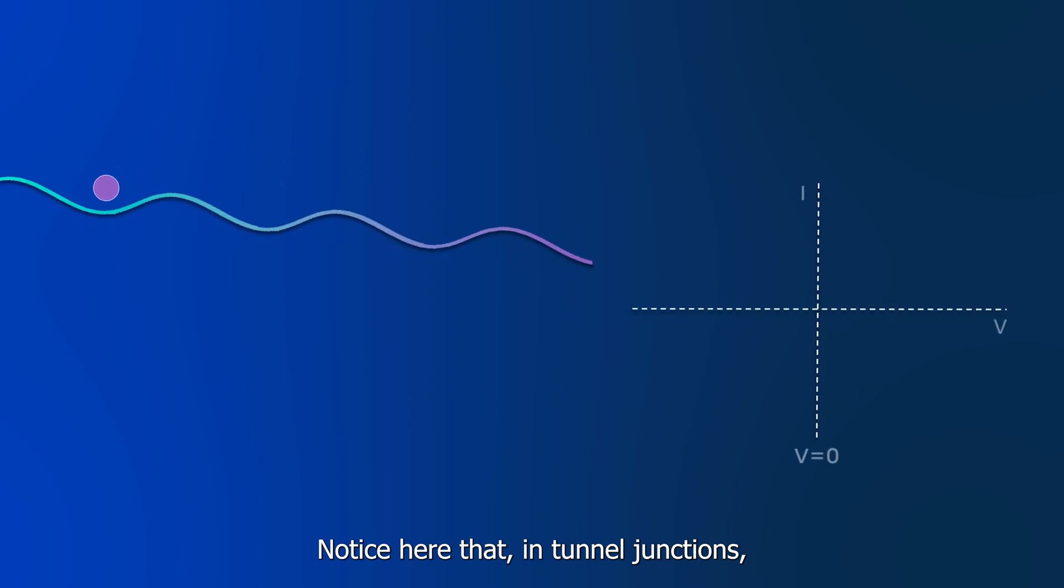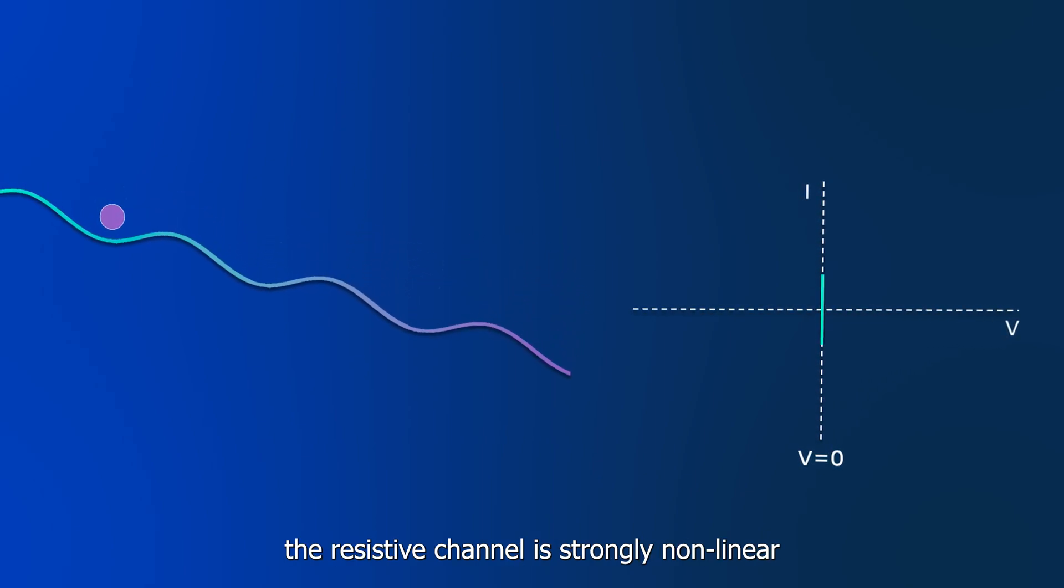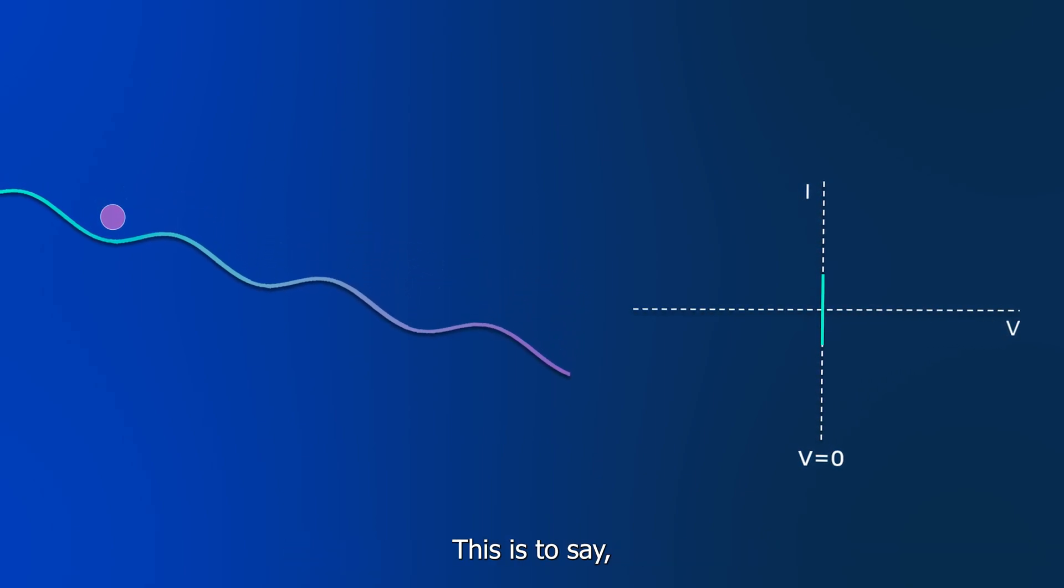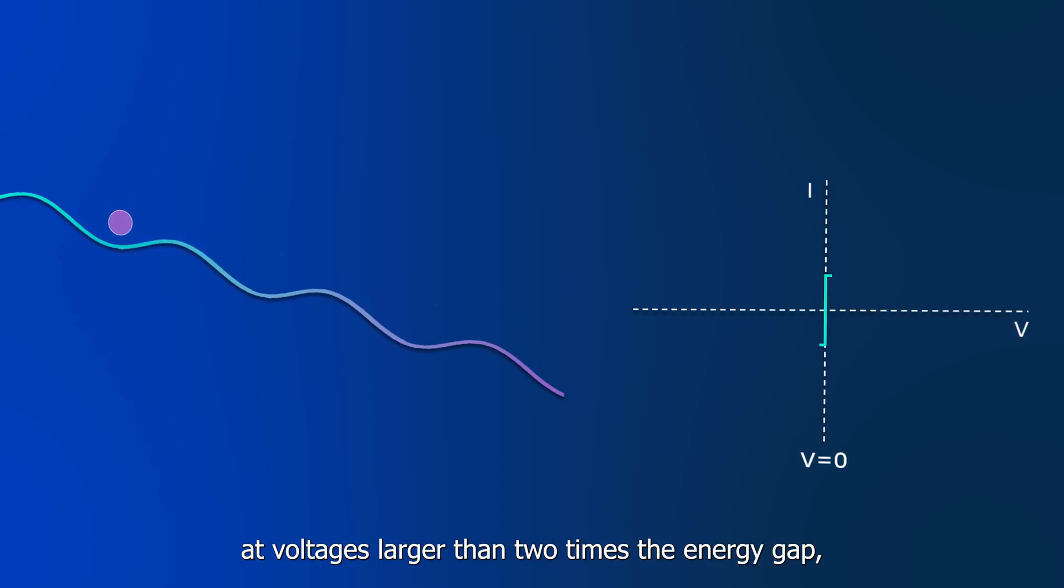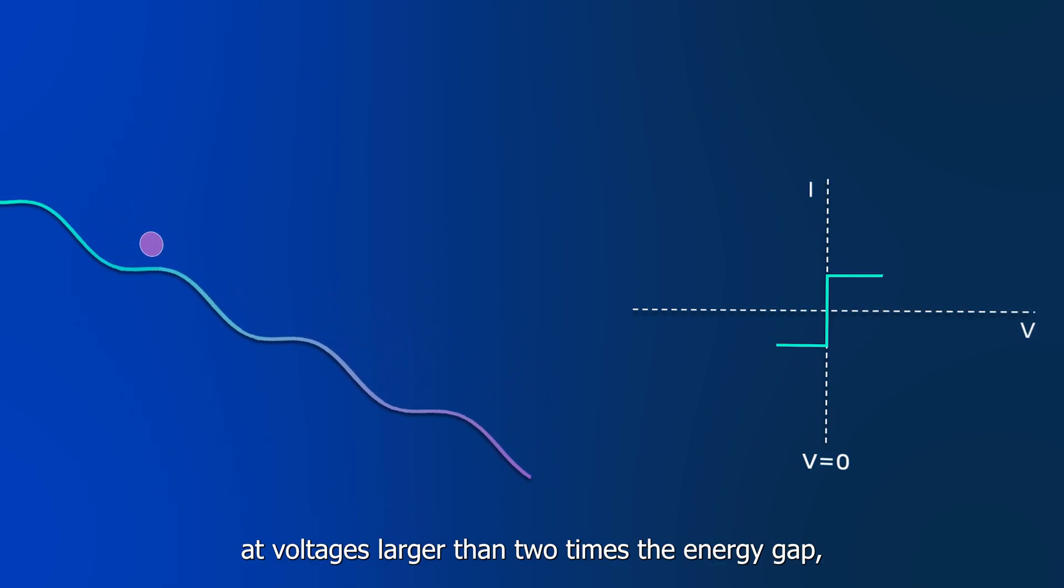Notice here that in tunnel junctions, the resistive channel is strongly non-linear. This is to say, at voltages larger than two times the energy gap, the junction can be approximated by a resistor.